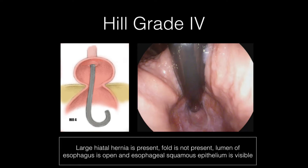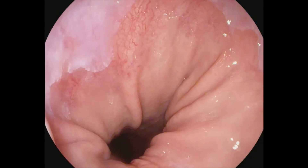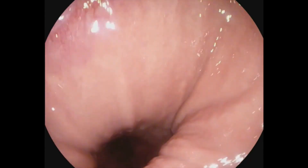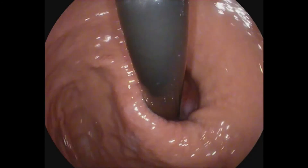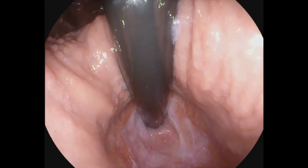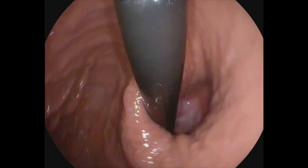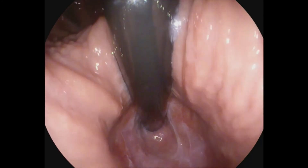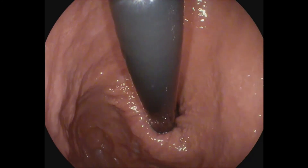Finally, with a grade 4 valve, the patient has a large hiatal hernia and essentially no fold, so that the lumen of the esophagus is gaping open, allowing the squamous epithelium to be viewed from below. In a Hill-grade 4, the hiatus is completely open and the scope is never gripped by the valve. The valve is so enlarged that you can fully see the Z-line as well as the esophageal squamous mucosa. There is obvious stomach in the chest.